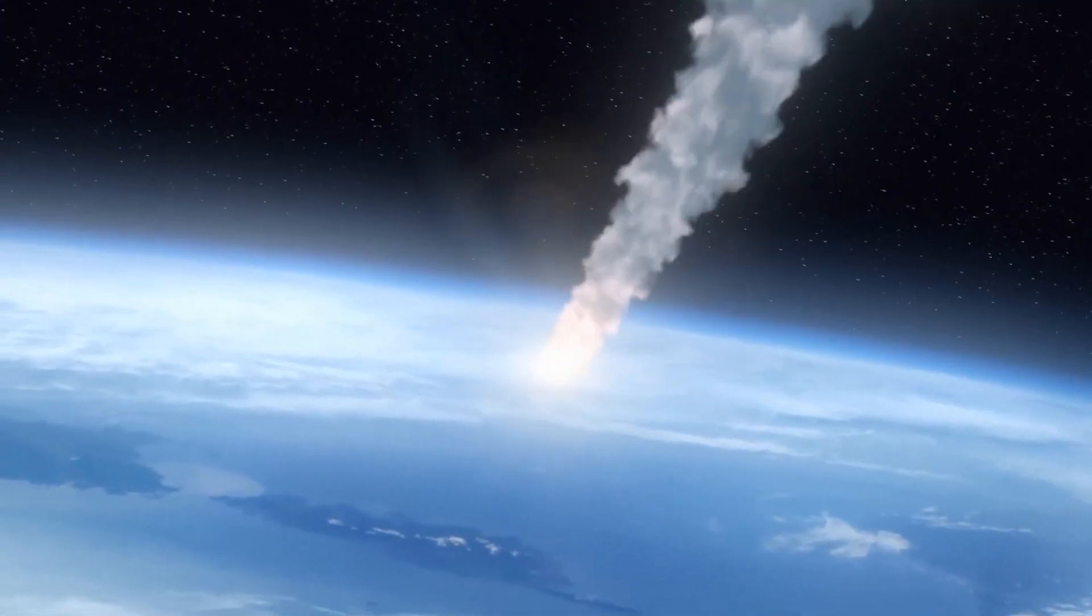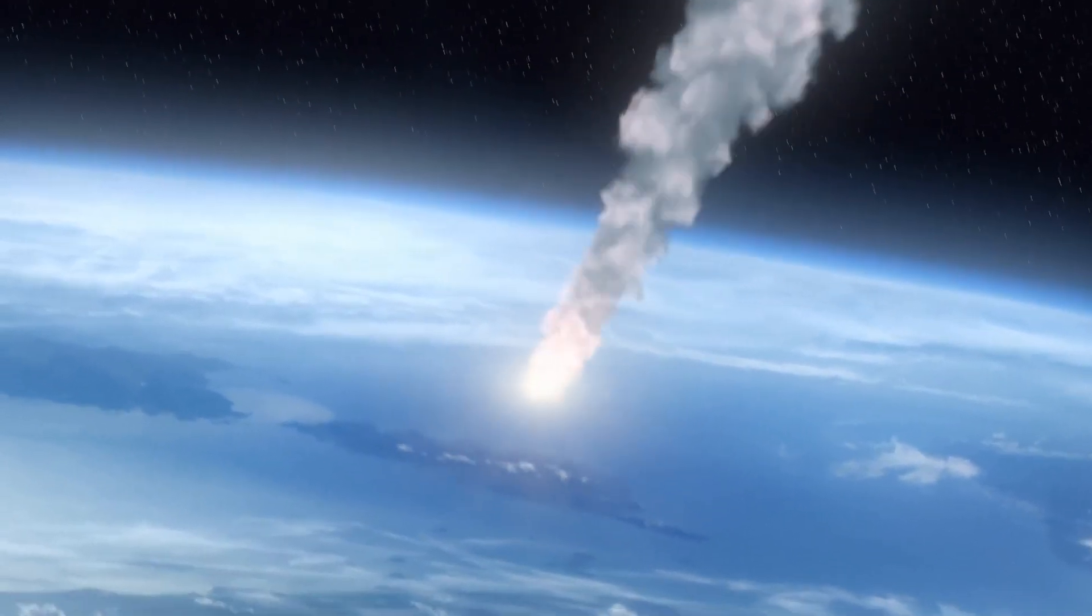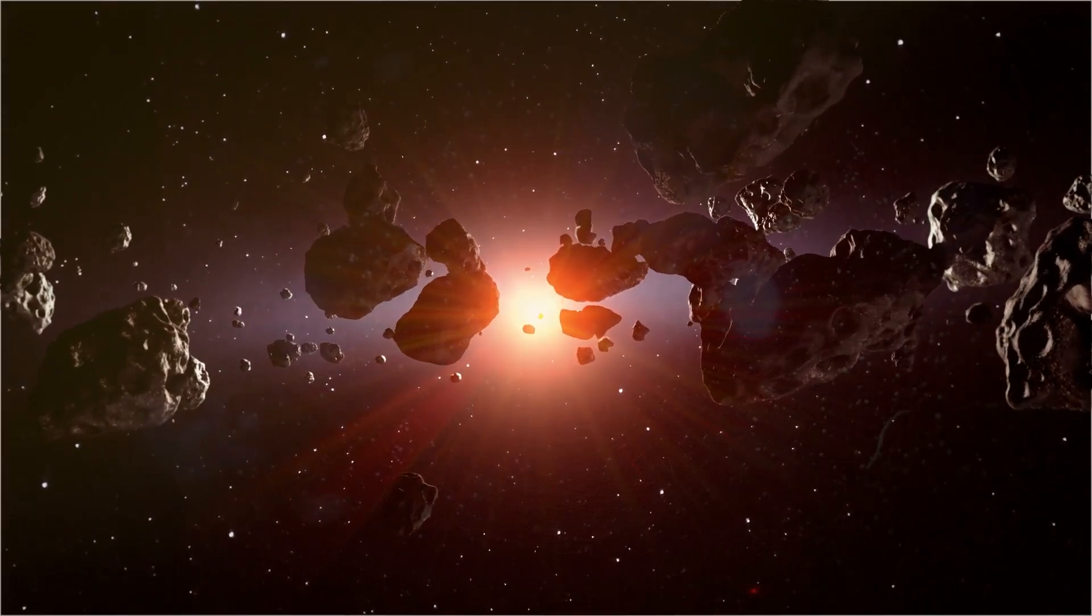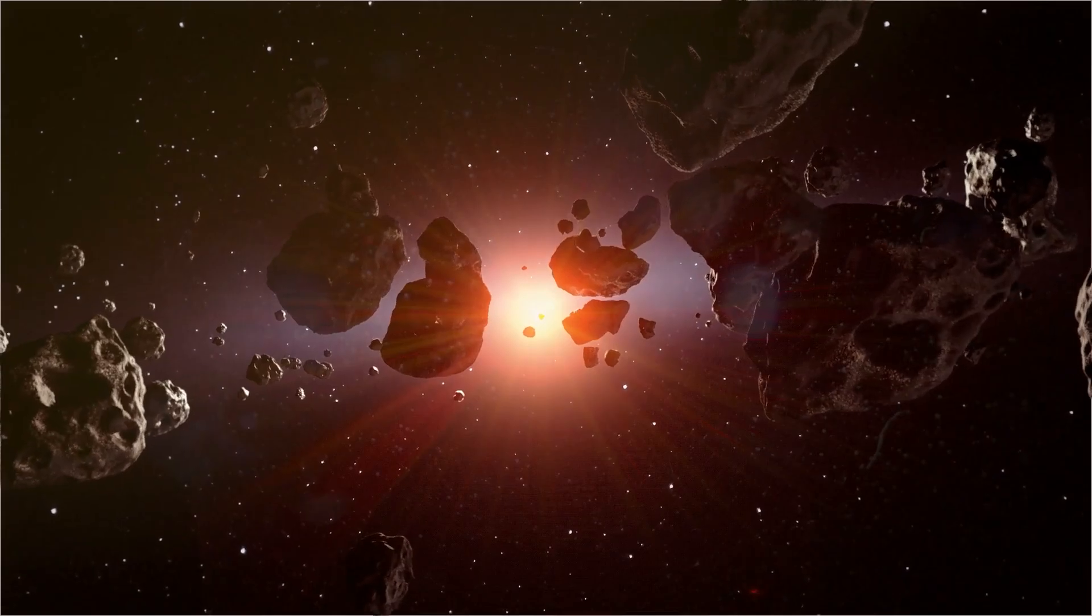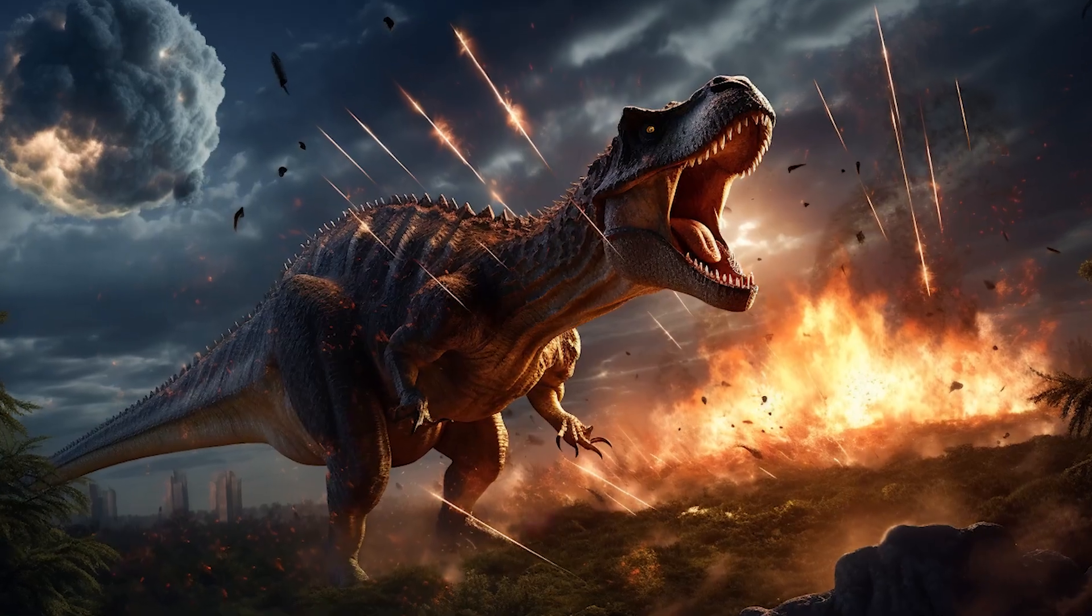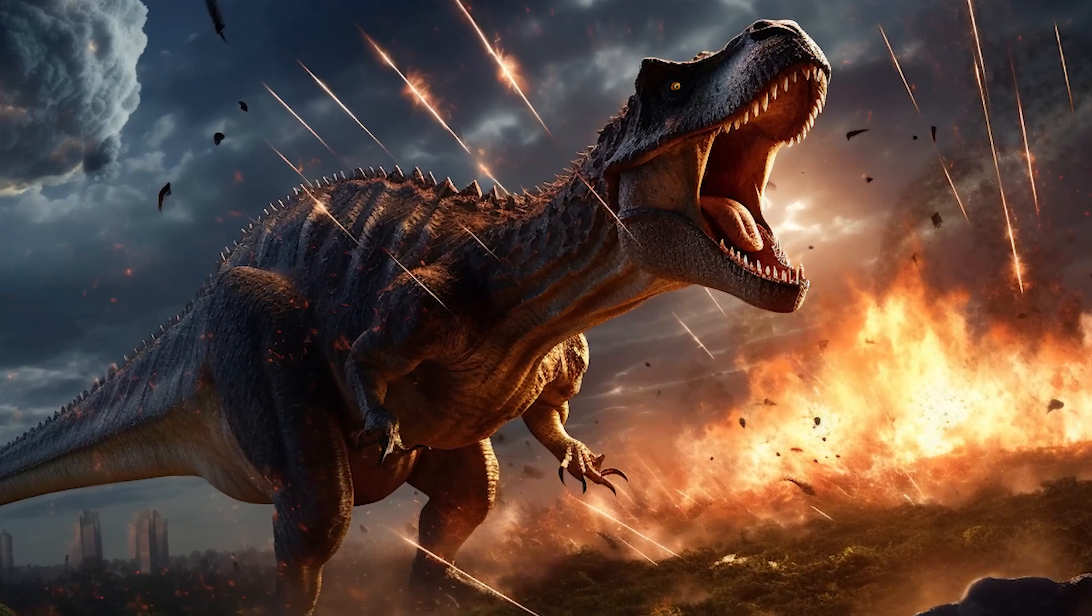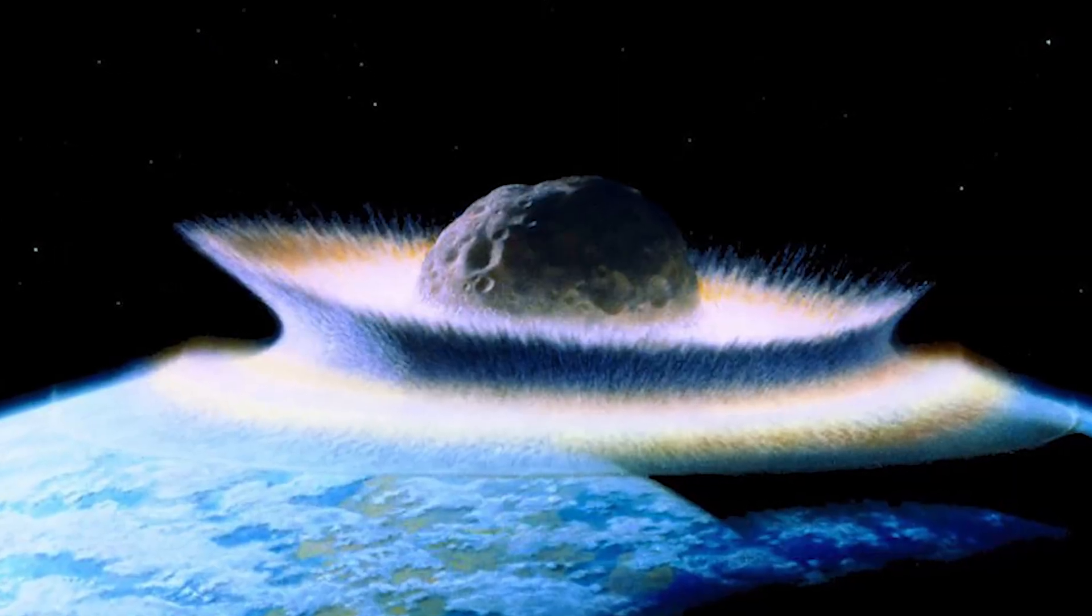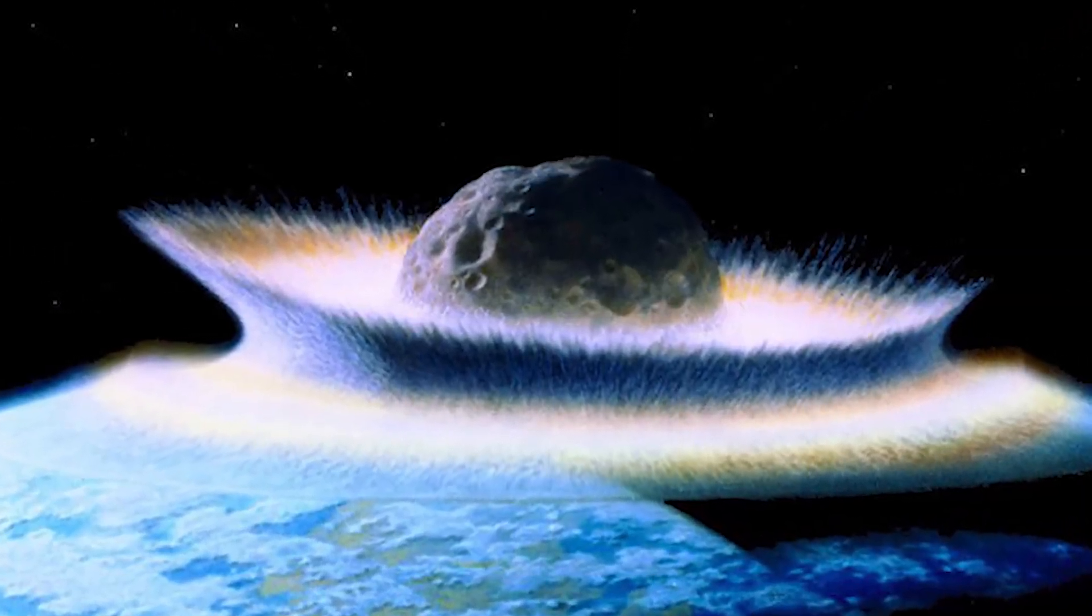Have you ever thought about the times Earth has played cosmic dodgeball with asteroids? Let's talk about some of Earth's most dramatic run-ins with these space rocks, starting with a biggie, the Chicxulub impactor. Picture this. About 66 million years ago, a giant asteroid, about 10 kilometers across, comes hurtling towards Earth.